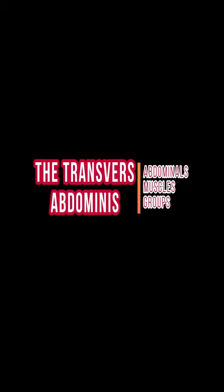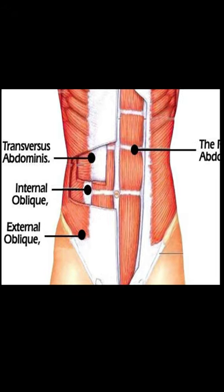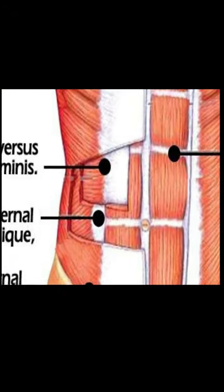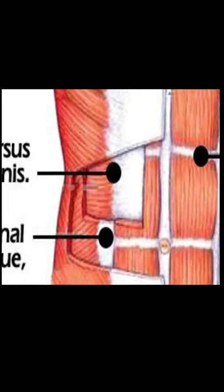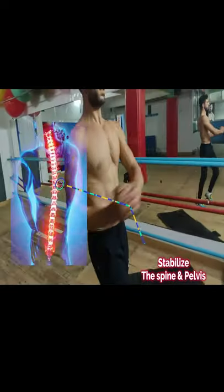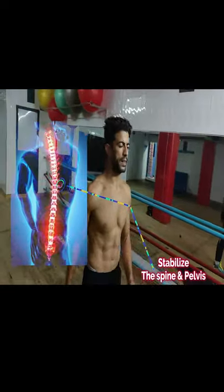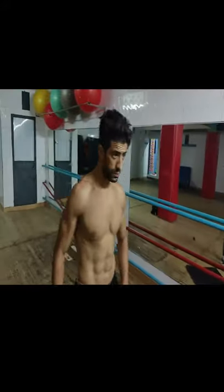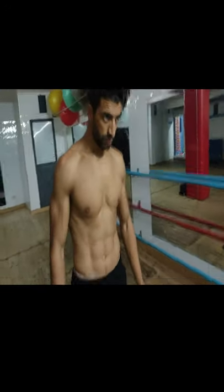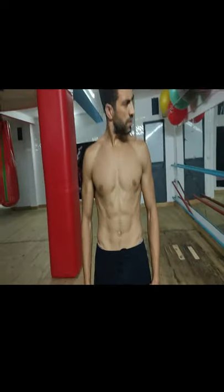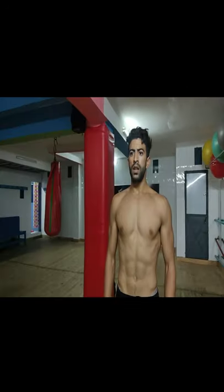The transverse abdominis. These muscles are harder to see; they provide stability and strength to the torso. The main roles of the transverse abdominis are to stabilize the spine and pelvis before any movement of the limbs can occur. The transverse abdominis muscles are deep muscles that go from side to side, situated under the internal abdominal obliques.